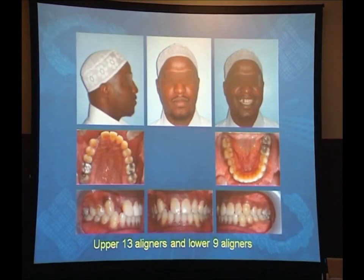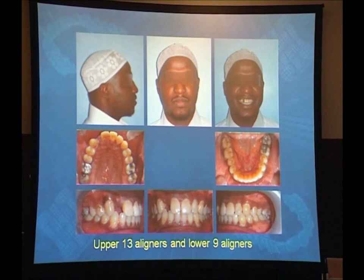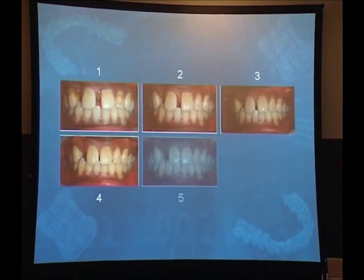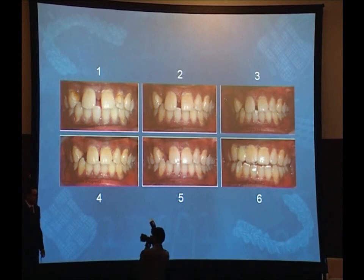In less than about six months it was enough to finish the case. As we can see here, complete closure of the spaces except at the site of the missing lateral, retraction of the upper and lower incisors, correction of the midline, and we also performed a frenectomy for the high frenum attachment. At the end, we used an abutment inside the retainer until the patient starts doing his implant.